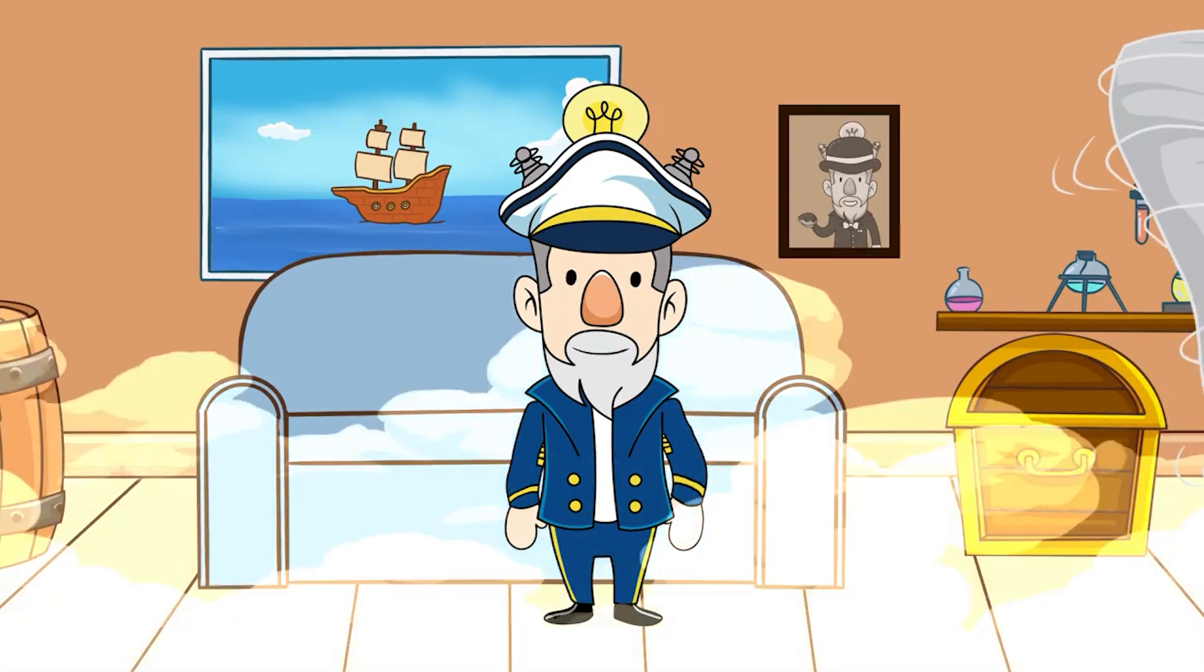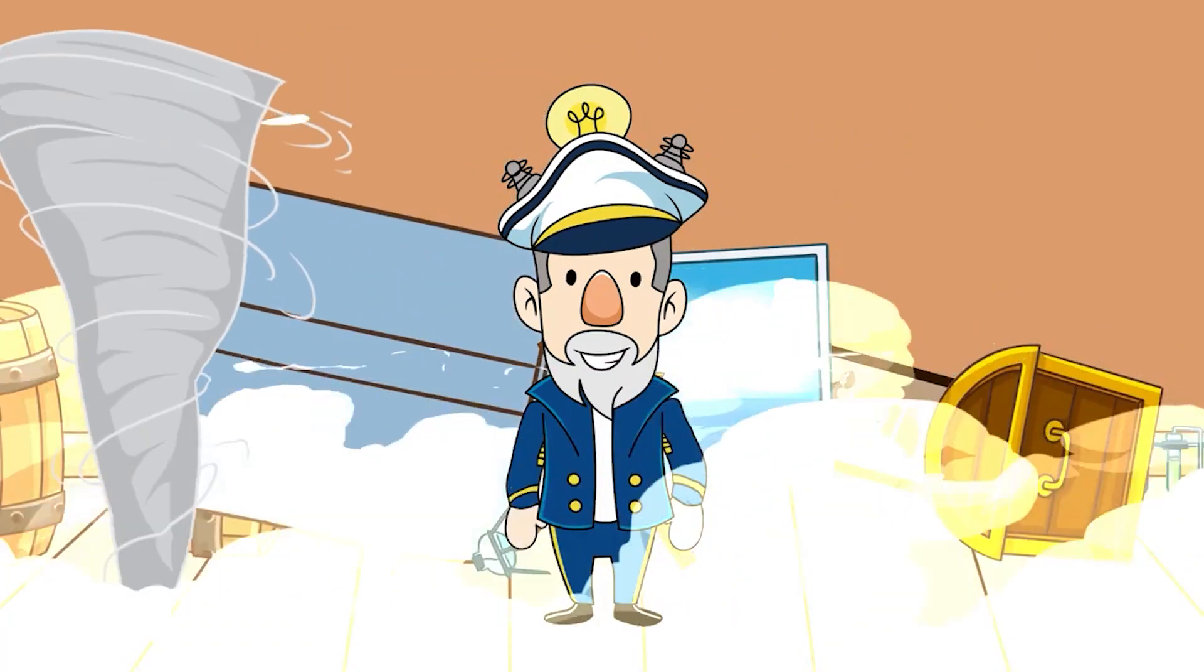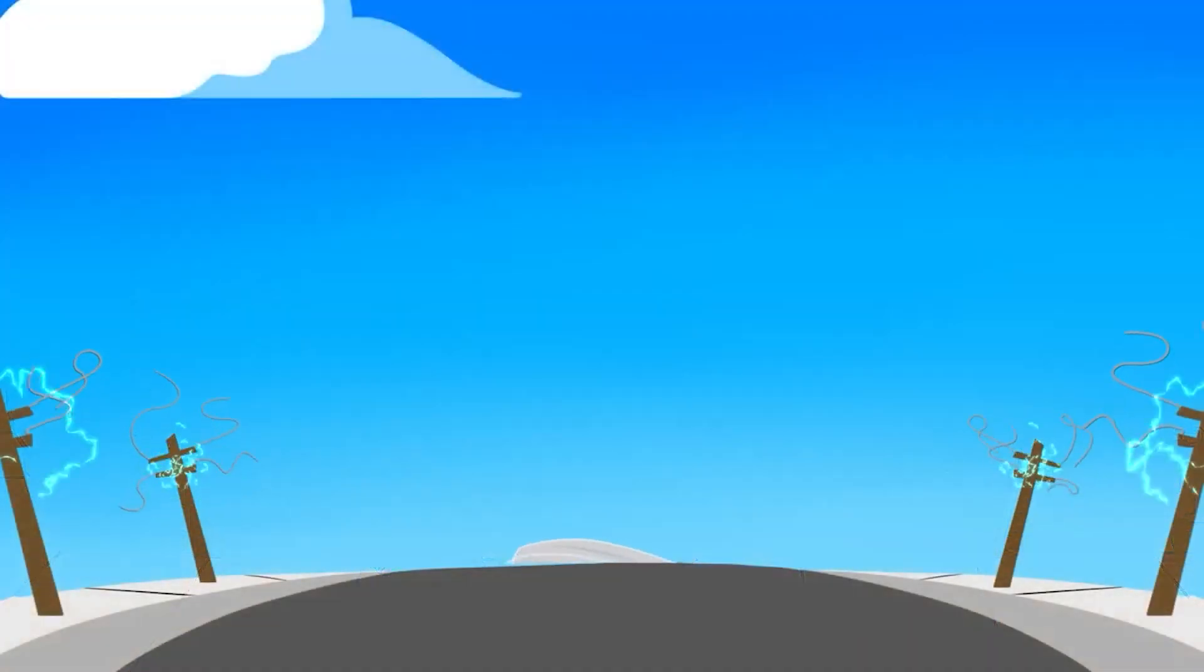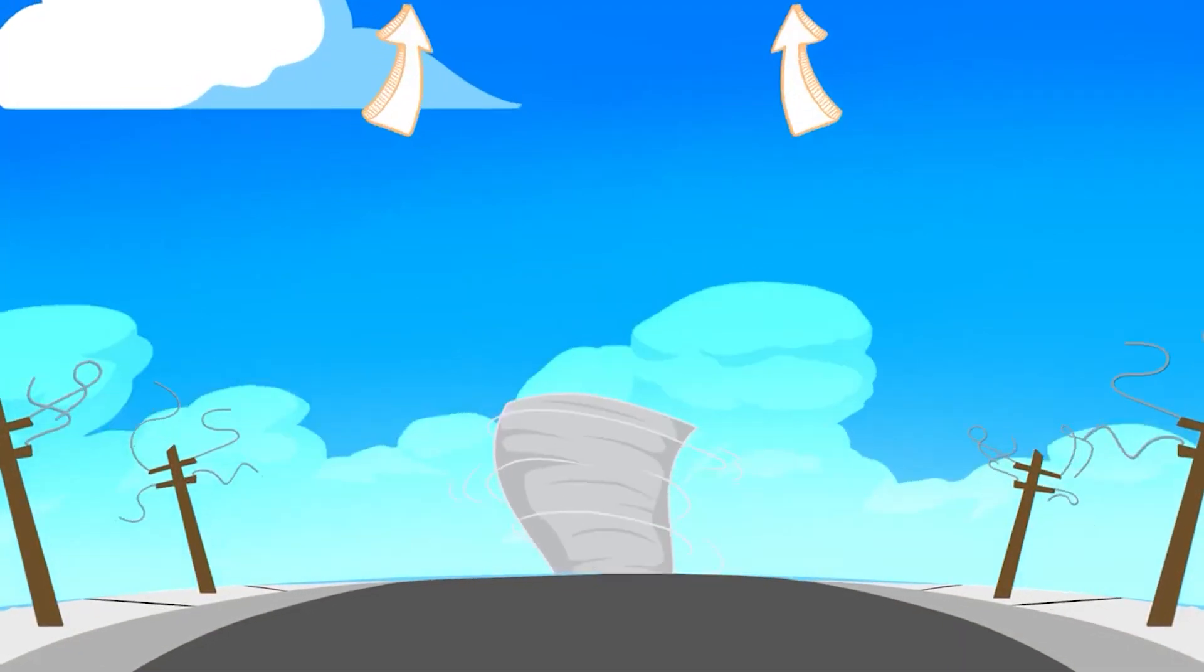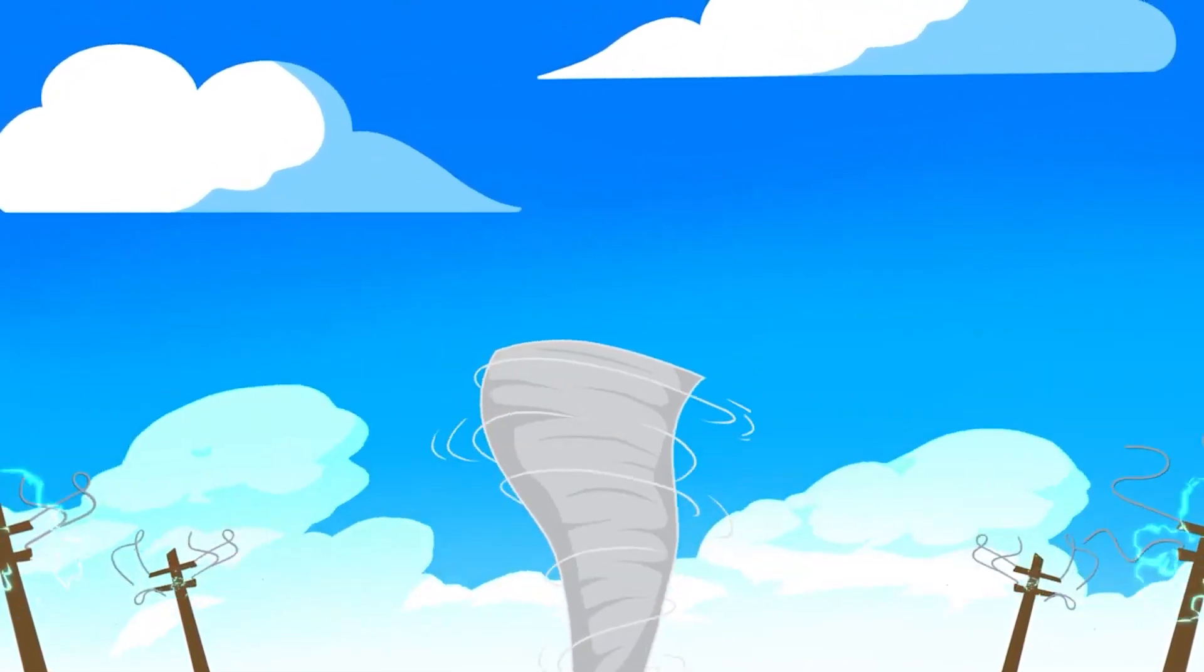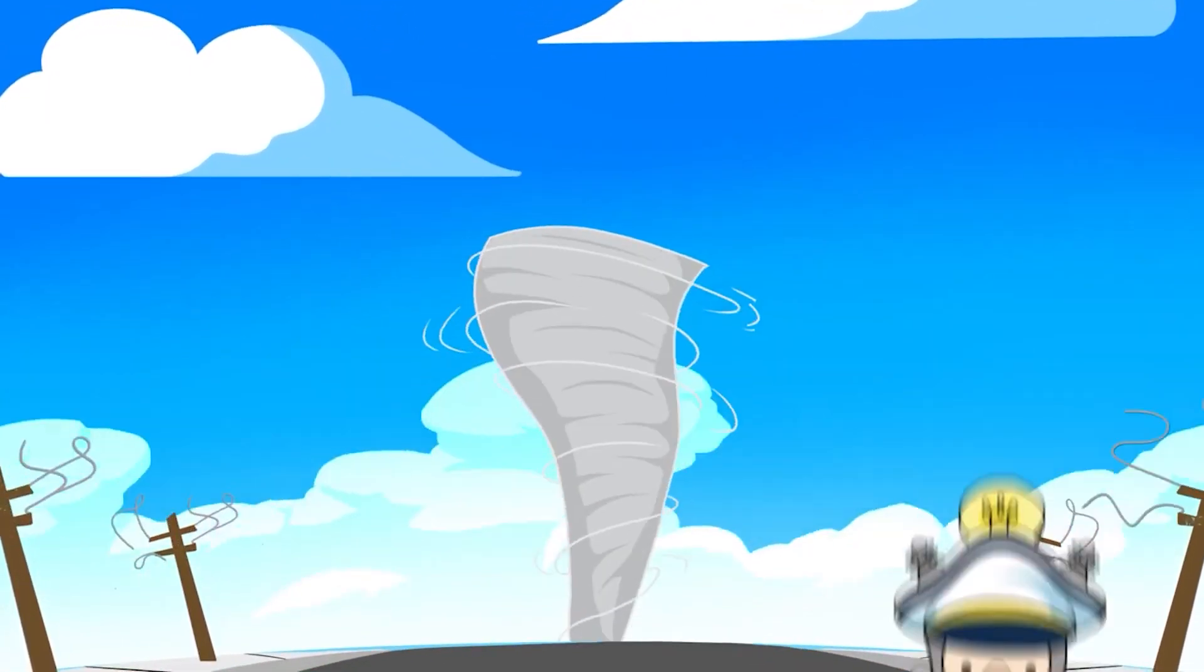Tornadoes are some of the most scariest weather phenomena out there, and they cause a lot of damage in their most extreme forms. A tornado is essentially a column of air which rotates very fast. It touches the ground but also the base of the clouds, creating effects like whirlwinds or twisters.